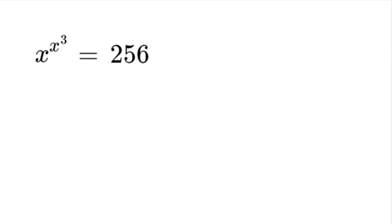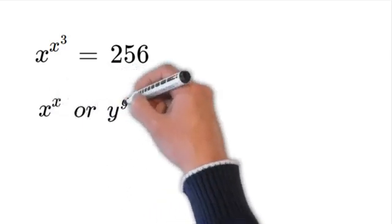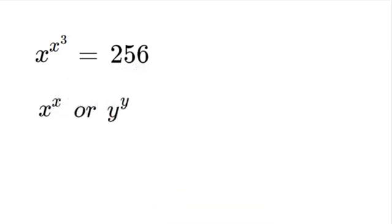Now, how we're going to do this is we want to get the left side of the equation similar to something like this: x to the power of x or y to the power of y. We want the number to have the same exponent as the actual number. The reason we're doing that will make more sense as we get further into the equation. So just remember that.